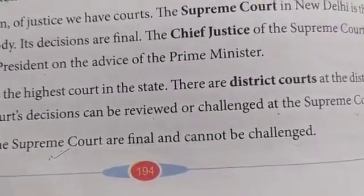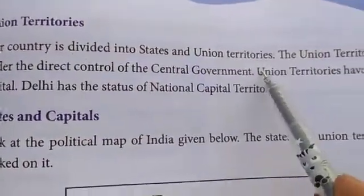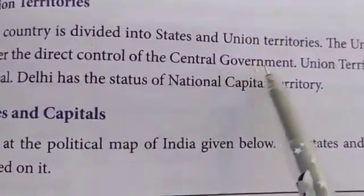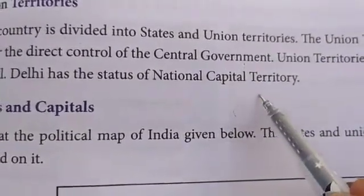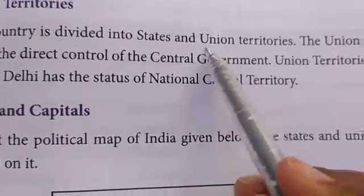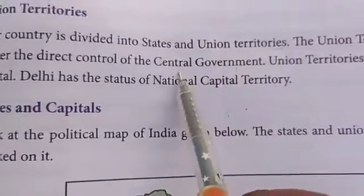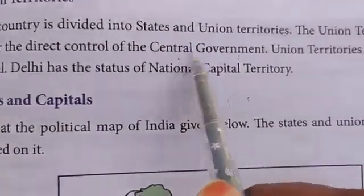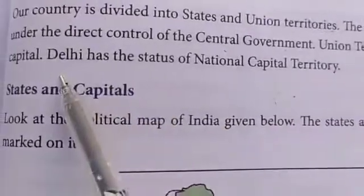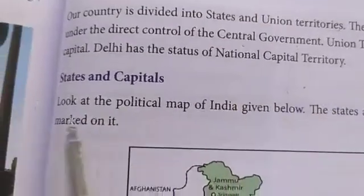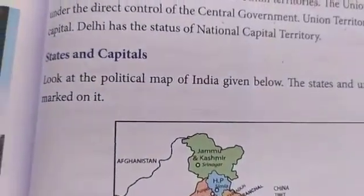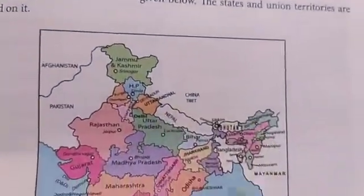About union territories: our country is divided into states and union territories. Union territories come under the direct control of the central government. In every state we have one government, but union territories are looked after by the central government only. Union territories have their own capital. Delhi has the status of National Capital Territory. Look at the map to find the states and union territories marked.